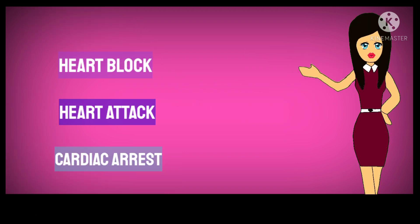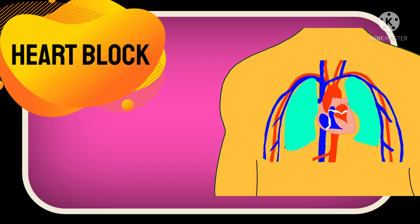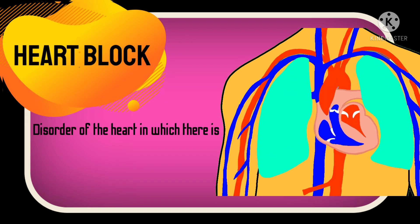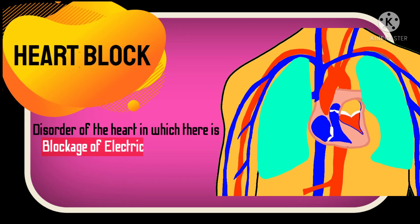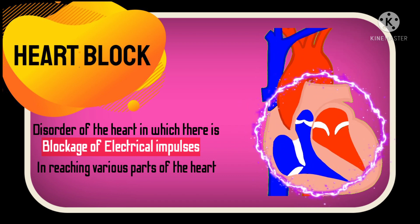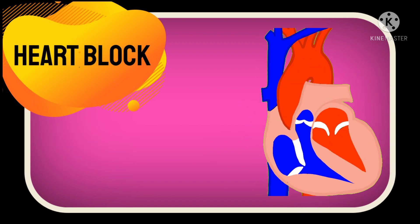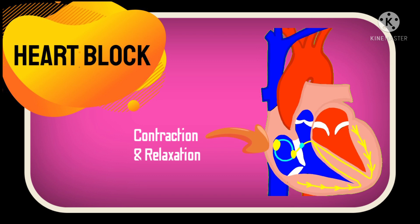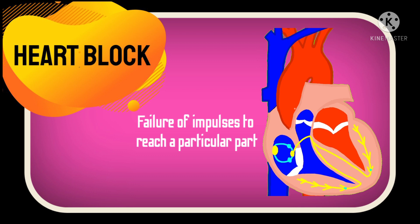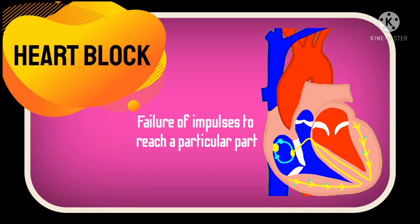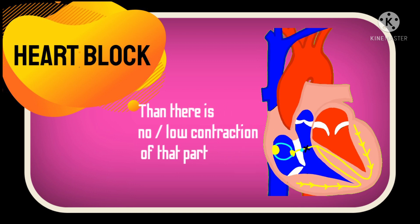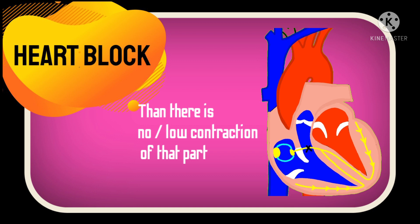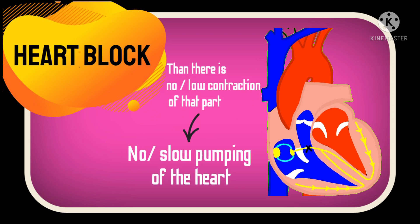Let's begin. Heart block is a disorder of the heart in which there is a blockage of electrical impulses reaching various parts of the heart. The heart contracts and relaxes based on these electrical signals, and when they fail to reach a particular part of the heart — like the ventricles — there is no contraction of the ventricles, which leads to no or slow pumping of the heart.